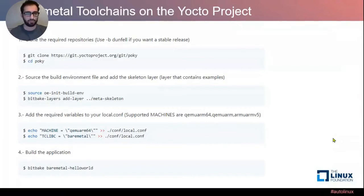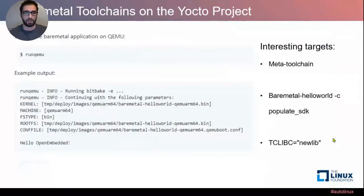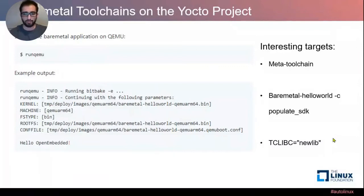After building, you can run QEMU just as you would with a Linux system. At the end, once QEMU runs, you'll get the 'Hello Open Embedded' string, meaning the application ran properly. All dependencies and the toolchain are built automatically — it just works out of the box. You can also build the bare-metal toolchain target to get an SDK, and if you do bare-metal-helloworld with dash-C populate_sdk, you get an SDK with the dependencies for your application.